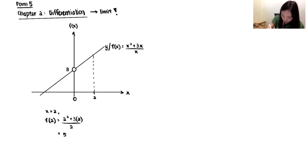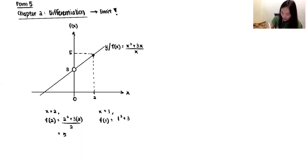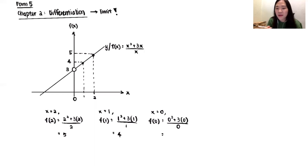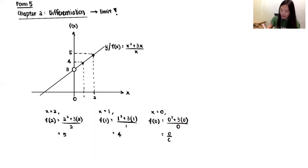So if x is 2, y is 5. Next I'm curious about x=1 - substitute in, press calculator, I get 4. So if x is 1, y is 4. Next we try x=0. Substitute: 0 squared plus 3 times 0, over 0. The top I get 0, the bottom I get 0. I get 0 over 0. Press calculator and you see 'Math Error' - that means undefined.